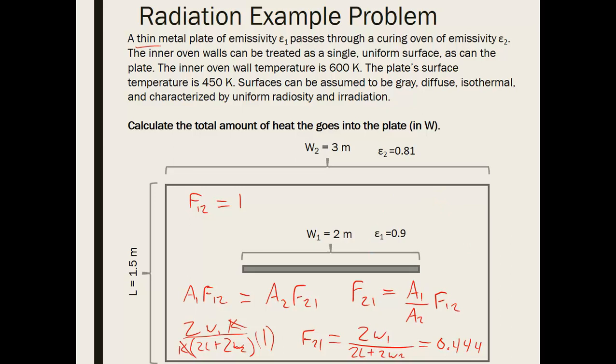Now what we can do is we can use an equation because this is what's known as a two surface enclosure. We have one surface being completely enclosed by another surface. So we want to know the rate of radiative heat transfer between the two surfaces.